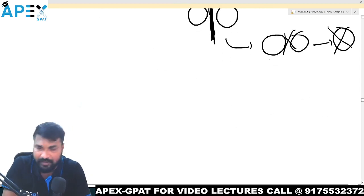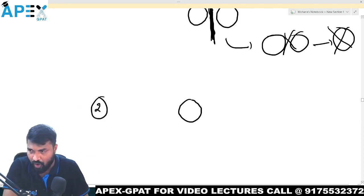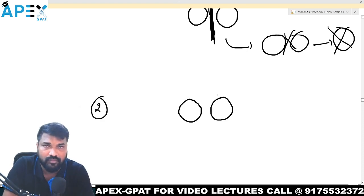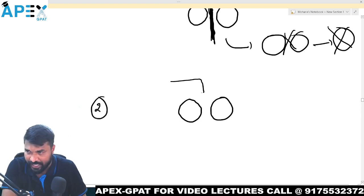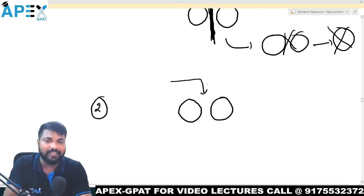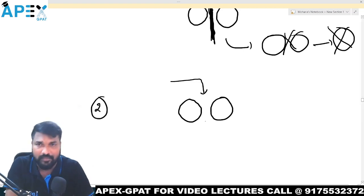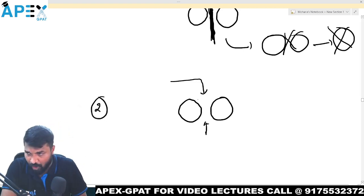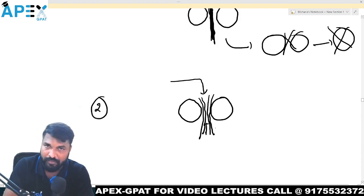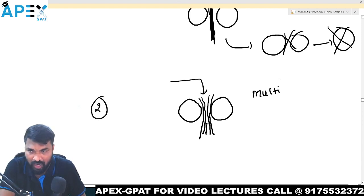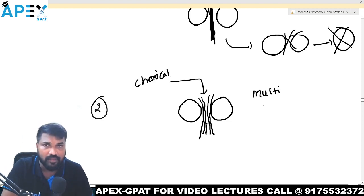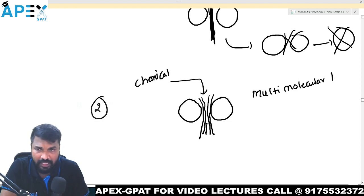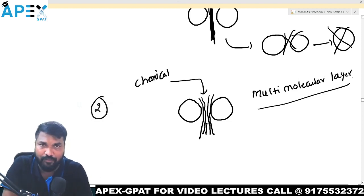The second approach: we also add a chemical agent that absorbs at the interface, but here they form many layers at the interface — multi-molecular layers. This is called multi-molecular layer formation.